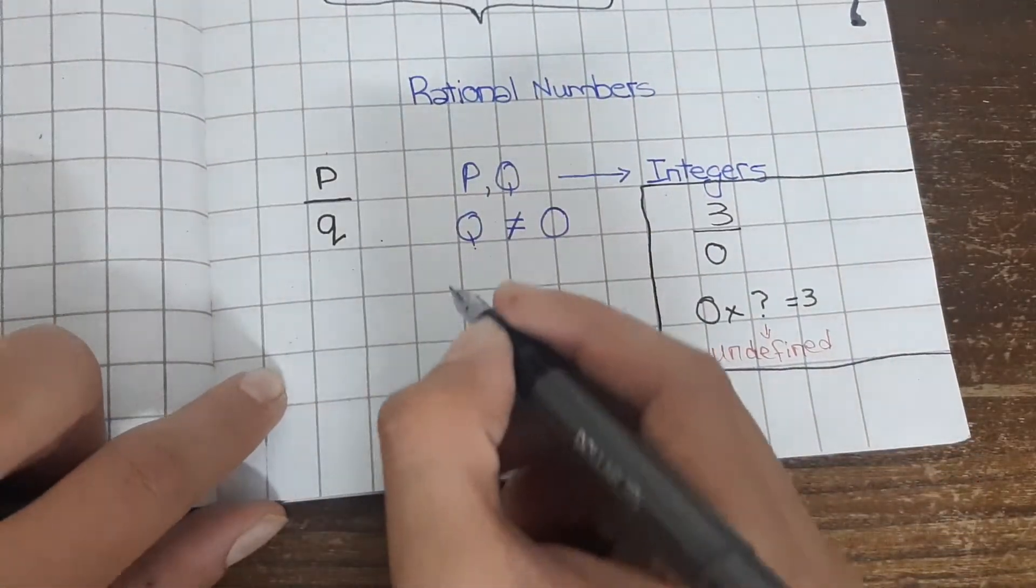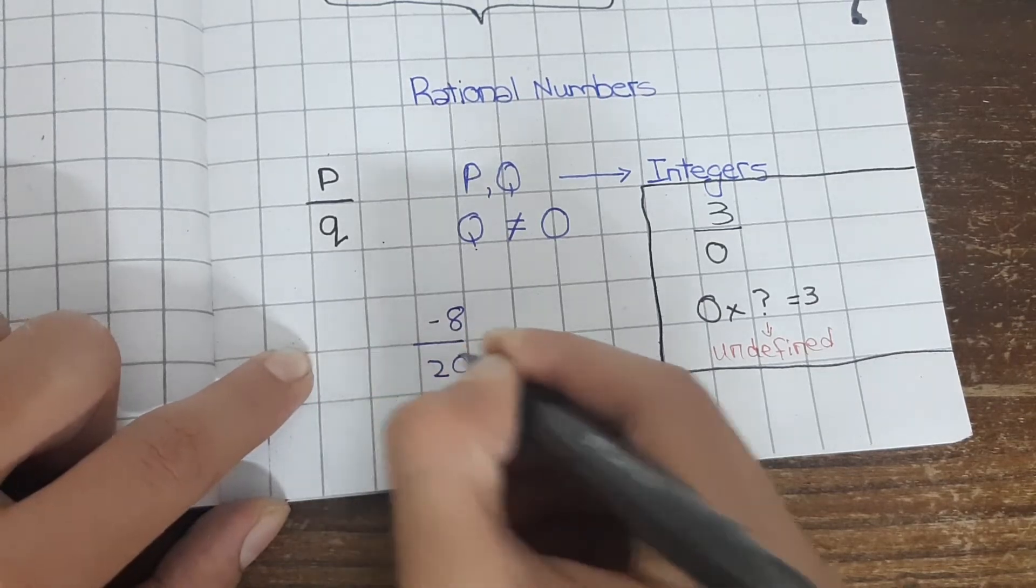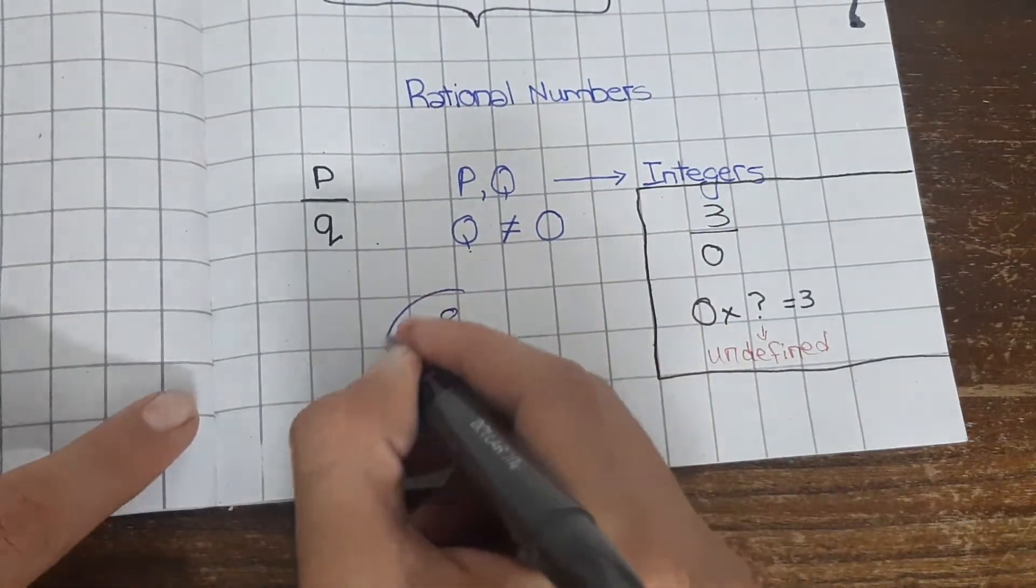For example, minus 8 over 20. This is also a rational number.